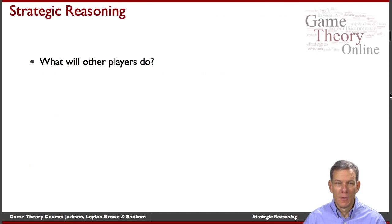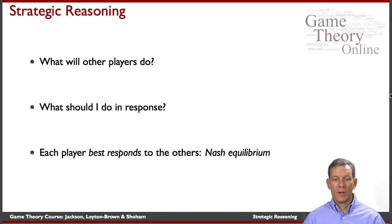What are other players going to do? You have to reason through that, and then what should I do in response? These are the key ingredients of a Nash Equilibrium. The Nash Equilibrium is everybody choosing their optimal response — the one that's going to give them the maximum chance of winning — given what the other players are doing.